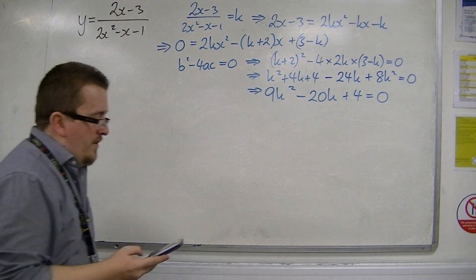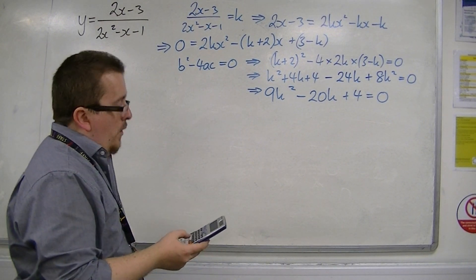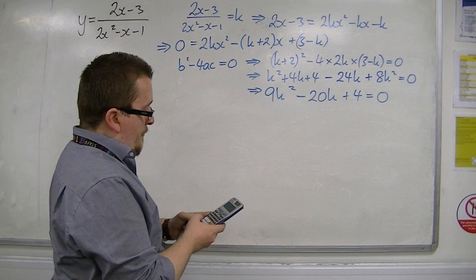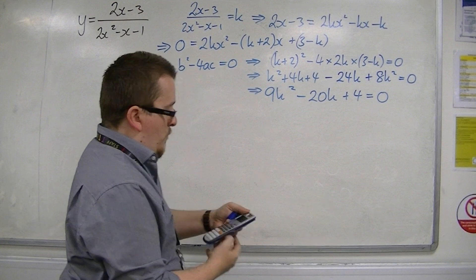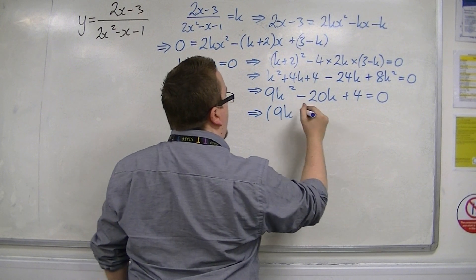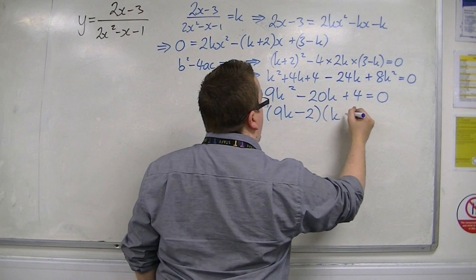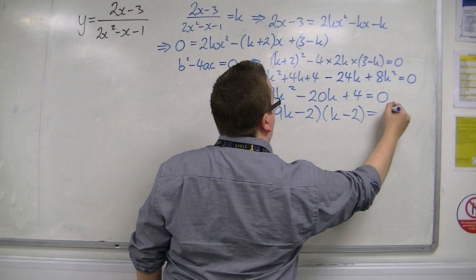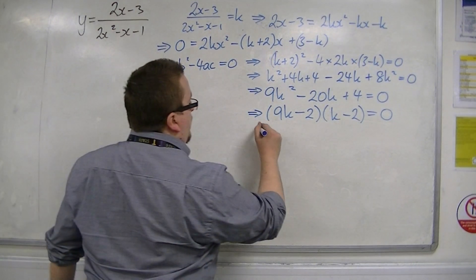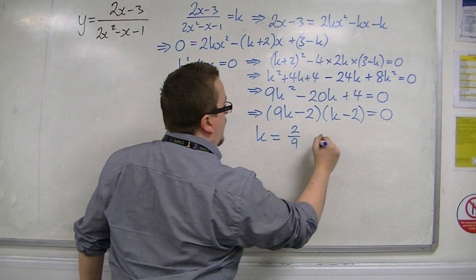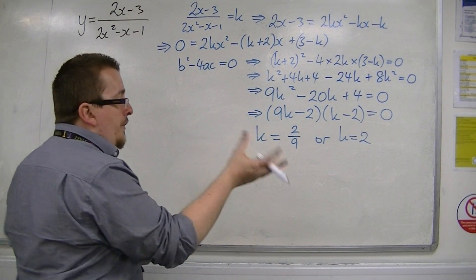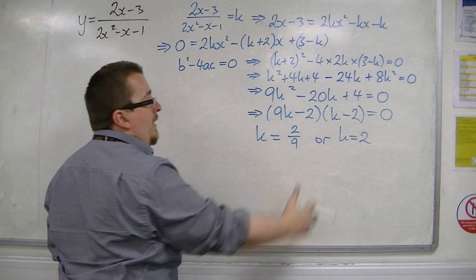So, you're going to want to either be able to spot it by factorising, or putting it into the quadratic formula. Now, if we put it into the formula, we get 2/9 and 2. So this will factorise to 9k minus 2, and k minus 2. So we have k is equal to 2/9, or k is equal to 2. So we can say that we've got these tangent lines at 2/9 and 2.